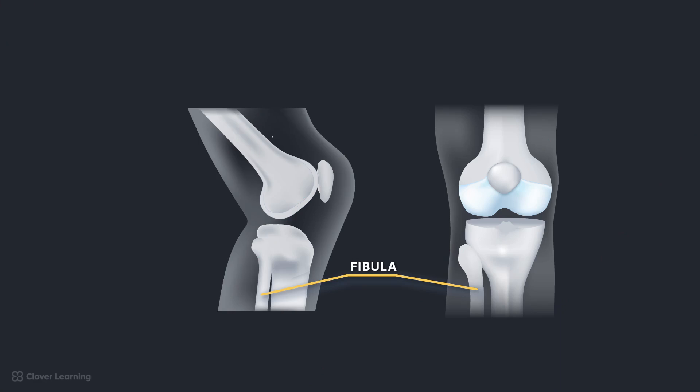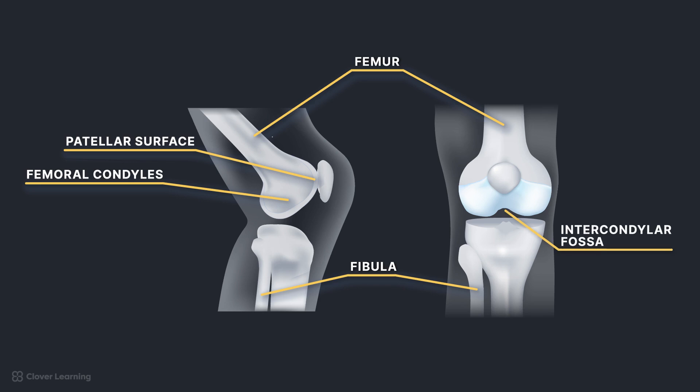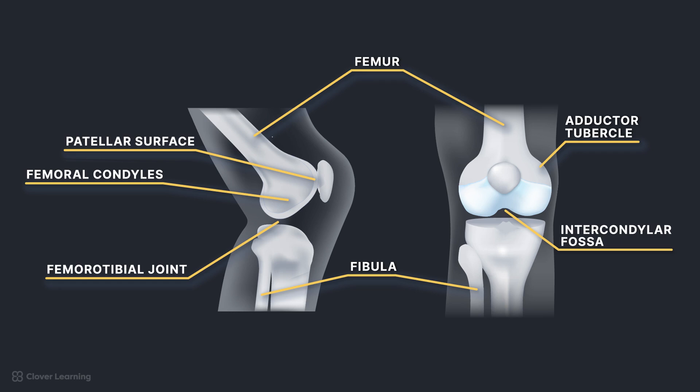Key terms for this lesson include anatomy of the femur: femoral condyles, which are the medial and lateral processes at the distal end of the femur; patellar surface, also called the intercondylar sulcus or trochlear groove, a shallow triangular depression in the anterior distal femur; intercondylar fossa, a deep depression in the posterior distal femur; adductor tubercle, a raised bony area on the posteromedial aspect of the medial condyle; and the femorotibial joint, the articulation between the distal femur and proximal tibia.